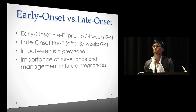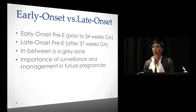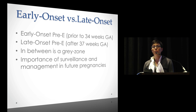They're classifying preeclampsia as early onset versus late onset — early onset being prior to 34 weeks gestational age, and late onset after 37 weeks. In between is a gray zone. The importance of this classification is really for surveillance during pregnancy, management of future pregnancies, and because cardiovascular disease risk factors are much higher when looking at just early onset preeclampsia.